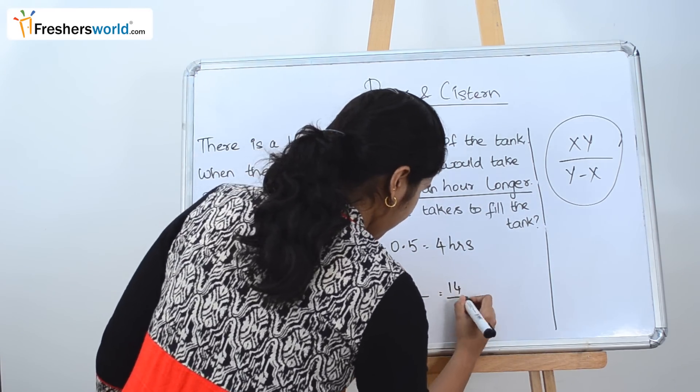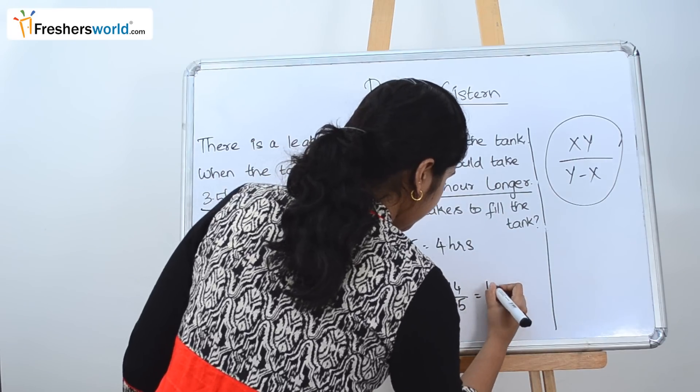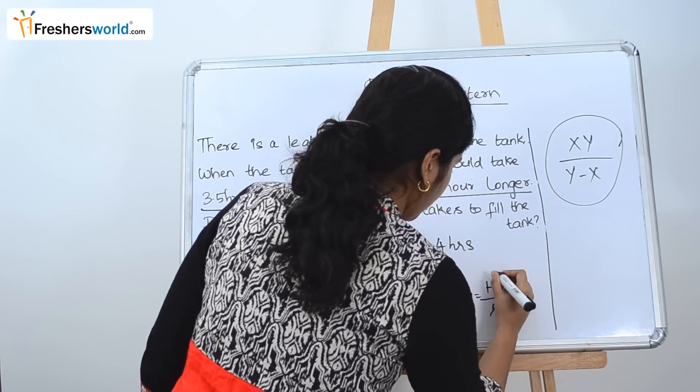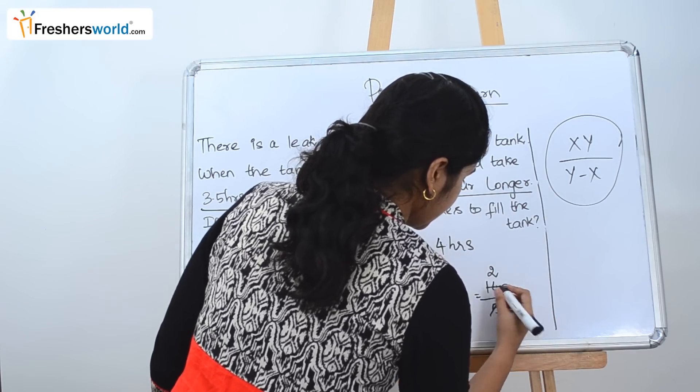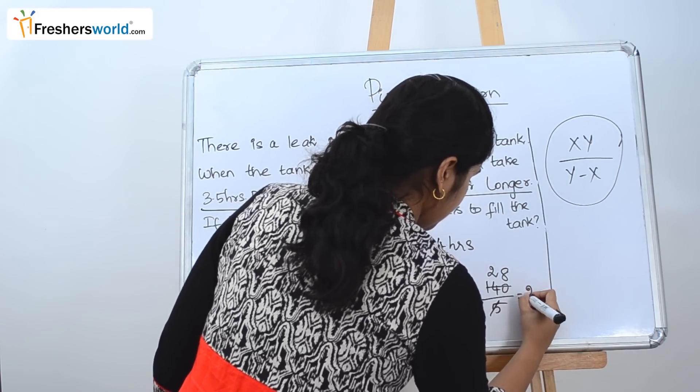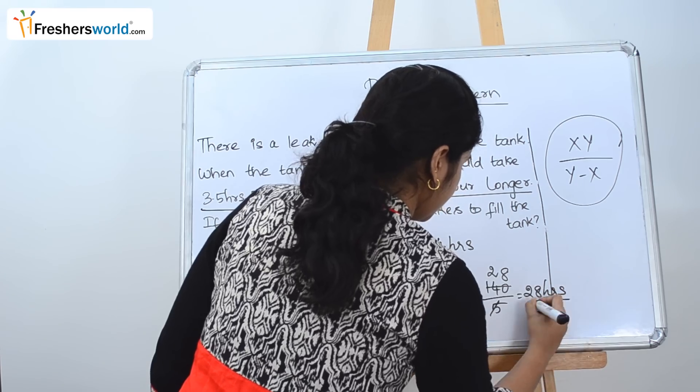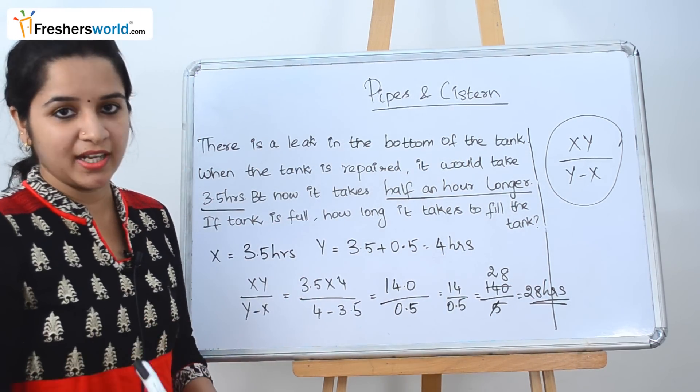So 14 by 0.5 can be rewritten as 140 by 5. So 5 times 28. So it takes 28 hours to fill the tank.